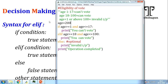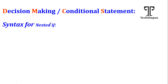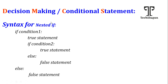Next, we will move on to nested if. Nested if means if inside if. Looking at the syntax: if a condition is true, go to the true statement; inside that, apply one more condition with its own true and false statements. If the outer condition is false, go to the false statement and terminate. If inside if is known as nested if.